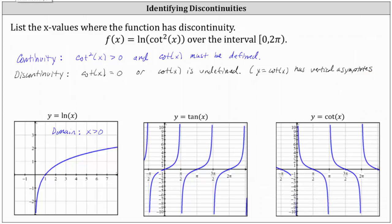We need to determine where the graph of the basic cotangent function over the interval from 0 to 2 pi radians, including 0 and not including 2 pi, is equal to 0 or has a vertical asymptote. Analyzing the graph of the basic cotangent function on the right, notice cotangent x is 0 at pi over 2 radians, as well as 3 halves pi radians. These are the two values where cotangent x is equal to 0 in the given interval.